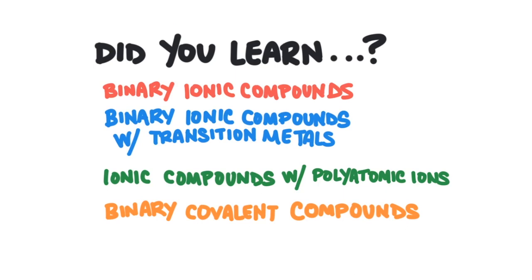So did you learn everything in this lesson? If you did, you learned how to name binary ionic compounds, how to name binary ionic compounds with transition metals, how to name ionic compounds with polyatomic ions, and how to name binary covalent compounds. Now you have the skills to read some of those ingredients listed around your home — sodium bicarbonate, zinc sulfate, magnesium hydroxide.